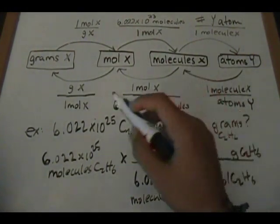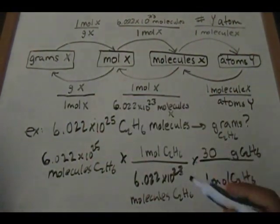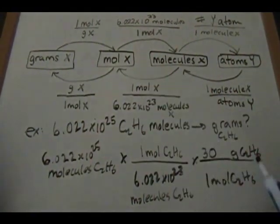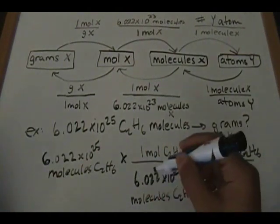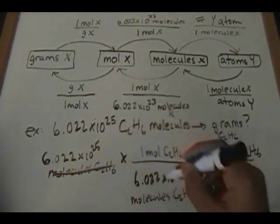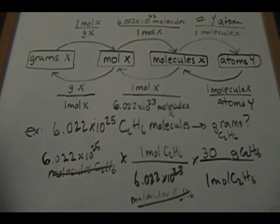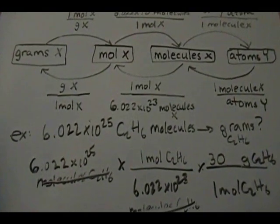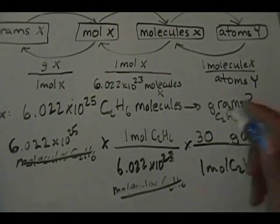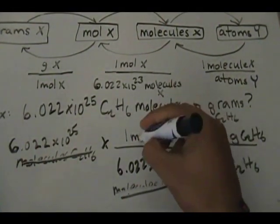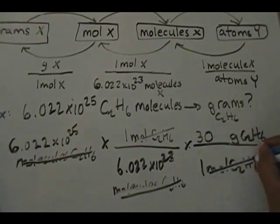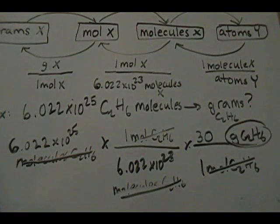We've converted from molecules of ethane to grams of ethane with one intermediate step. Let's make sure our units cancel out: molecules of ethane on top and molecules of ethane on the bottom cancel out. Then moles of ethane cancel out too, and we're left with grams of ethane — exactly what we wanted. Let's crank this out on our calculator.